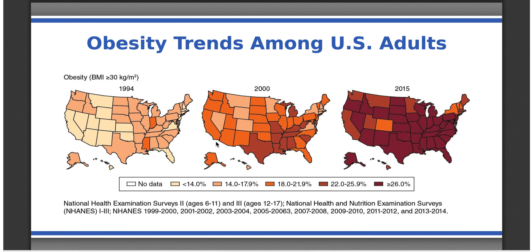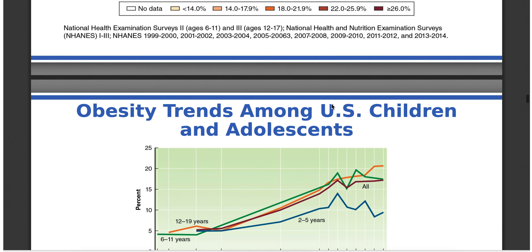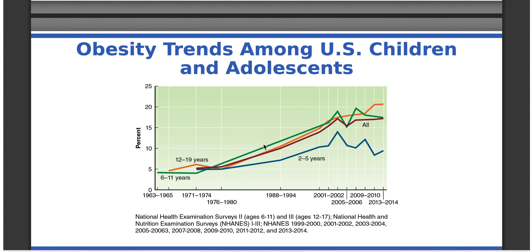From about 14–15% of people being considered obese, by 2015 the entire nation was over 26%, approaching 30%. Obesity trends among children and adolescents across different age groups, starting as young as two to five years old, have also continued to climb — with a few dips along the way — showing tremendous growth even in children.